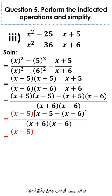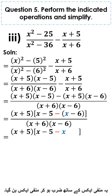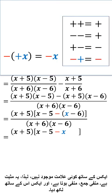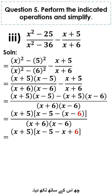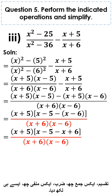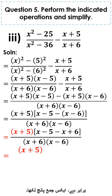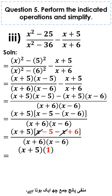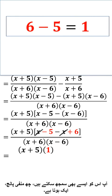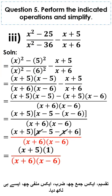x plus 5 is taken as common. The remaining values x minus 5 minus x minus 6 are written in brackets. Simplifying: x minus 5 minus x (minus minus is plus) plus 6. Plus x cancels with minus x, leaving minus 5 plus 6 equals 1. So we have x plus 5 times 1, divided by x plus 6 into x minus 6.